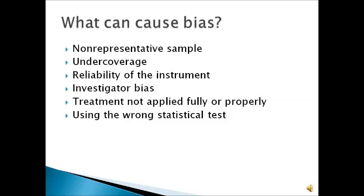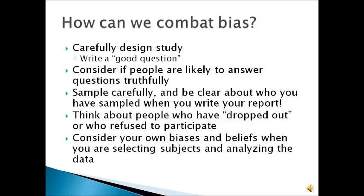So, the question becomes: how can we eliminate bias, and how can we, as consumers of data, note where bias could occur? First of all, it's important to carefully design a study and write a good question — one that you can answer with your data and one that isn't demonstrating preconceived notions. For example, instead of asking 'why is it always boys who are in in-house,' you might ask 'what are the characteristics of students who are in in-house for two or more days?' When you write questions, consider if people are likely to answer them truthfully.